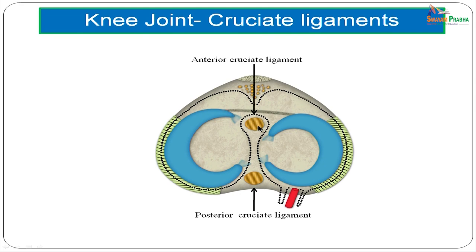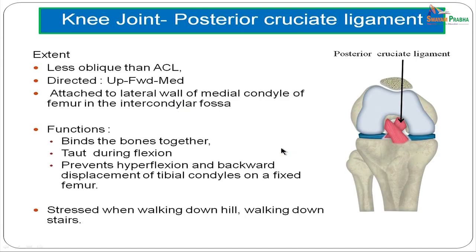The posterior cruciate ligament (PCL) extends upwards, forwards, and medially, attaching to the lateral wall of the medial condyle of the femur in the intercondylar fossa. It is less oblique than the ACL. Like the ACL, the PCL binds the bones together. It is taut during flexion, prevents hyperflexion and backward displacement of the tibial condyles on a fixed femur, and is stressed while walking downhill or downstairs.